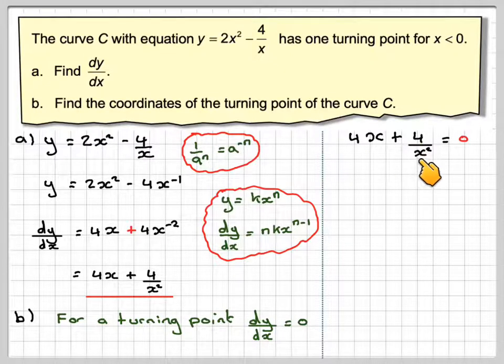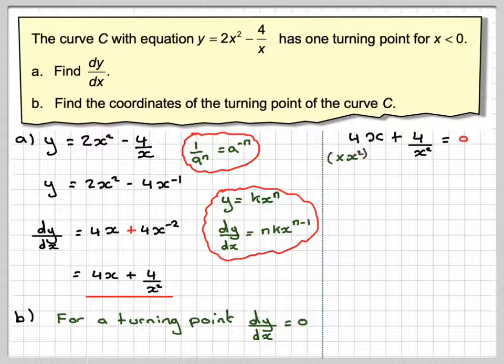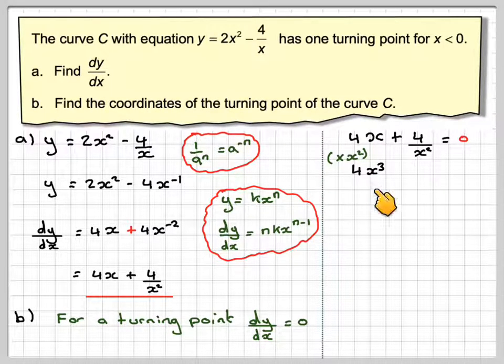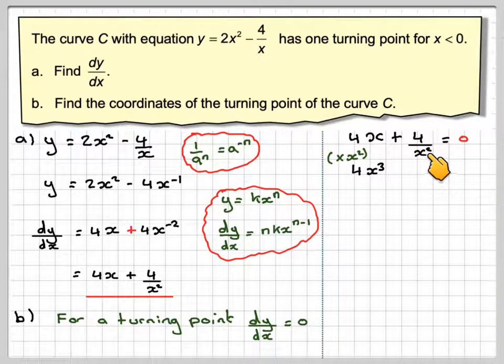We're going to put 4x plus 4 over x squared equals 0. What makes this difficult is the x squared here, so if we multiply the whole thing by x squared, we get 4x times x squared, which gives 4x cubed.